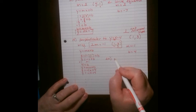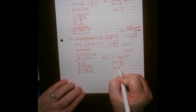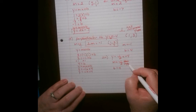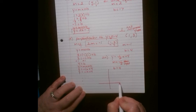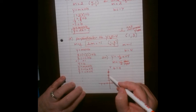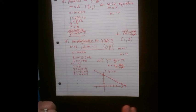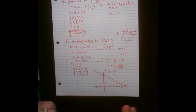Last problem: graph y equals negative one-half x plus 4. The slope is negative, so go down 1 to the right 2. Start at positive 4 on the y-axis — the y-intercept — then go down 1 to the right 2 repeatedly to plot the line. That gives us the graph. There's review number 2; review number 3 is very similar — see if you can do that one and I'll post those answers as well.